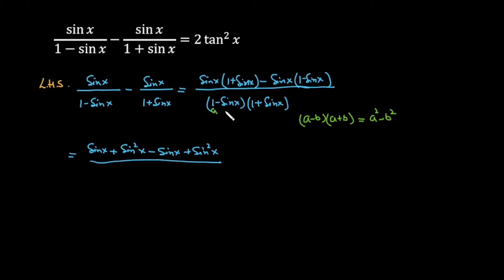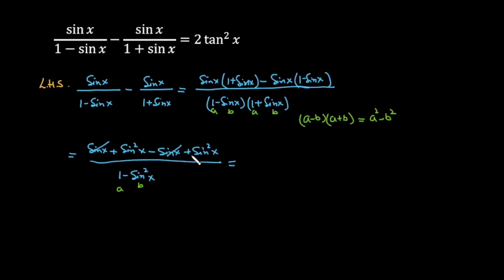Here 1 is our a and sin x is our b. In the numerator, positive sin x and negative sin x cancel. So the numerator simplifies to sin squared x plus sin squared x, which equals 2 sin squared x.